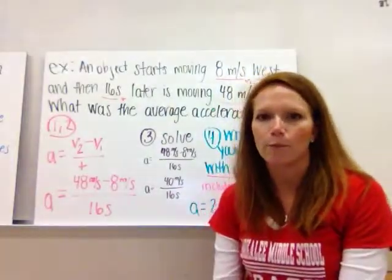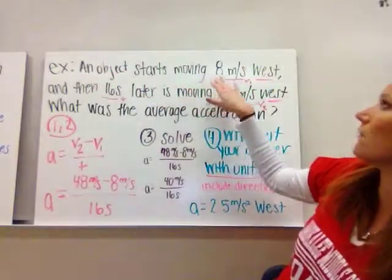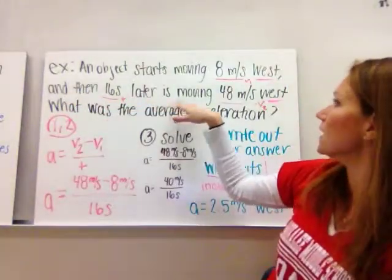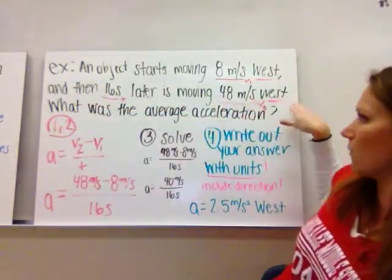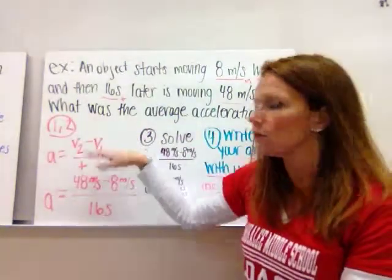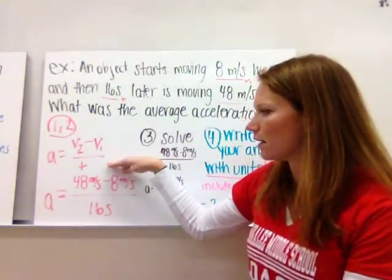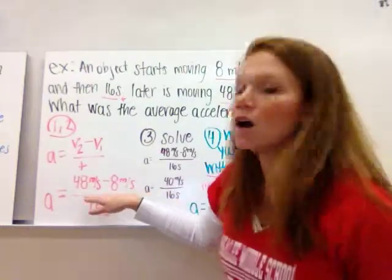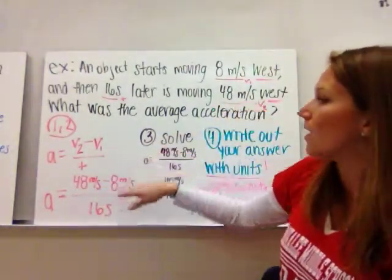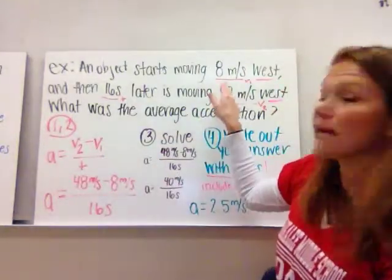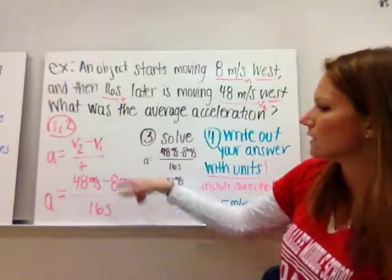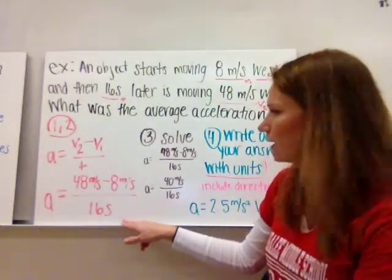Here's an example problem. An object starts moving at 8 meters per second west, and then 16 seconds later is moving 48 meters per second west. What was the average acceleration? So steps 1 and 2: we write down our acceleration formula and then plug in our numbers. Our second velocity was 48 meters per second, our first velocity was 8 meters per second, and the time was 16 seconds.